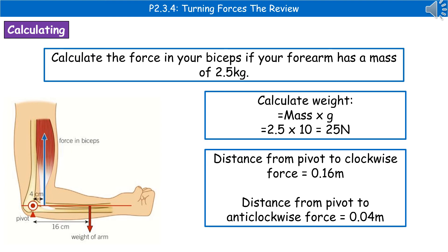Next, we need to calculate the distances from the pivot to the clockwise and anticlockwise forces. Looking at the diagram, two values are marked. Think logically about which is clockwise and which is anticlockwise, and notice that the values are in centimetres — so we must convert them to metres by dividing by 100. The distance from the pivot to the clockwise force is 0.16 m, and the distance to the anticlockwise force is 0.04 m.